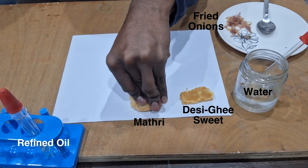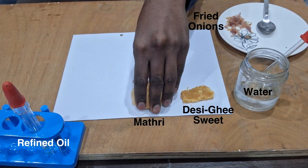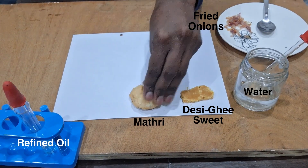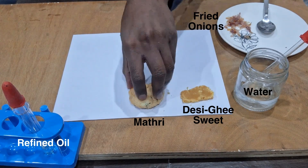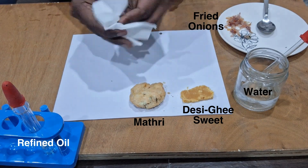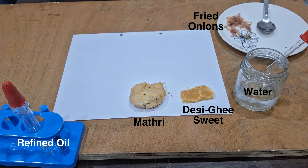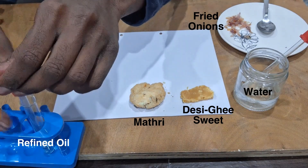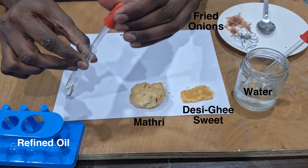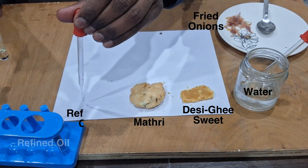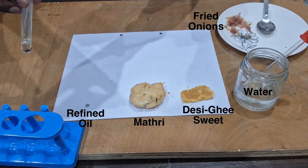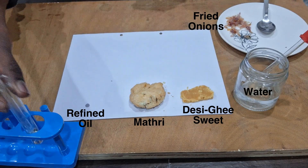I'll do the same thing with the matri — press it down on the piece of paper to see what happens. Now let's take some of the cooking oil, the refined oil, and with a dropper I'll put one or two drops onto the piece of paper.